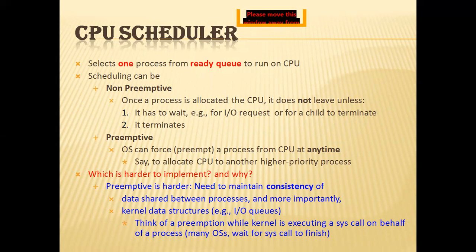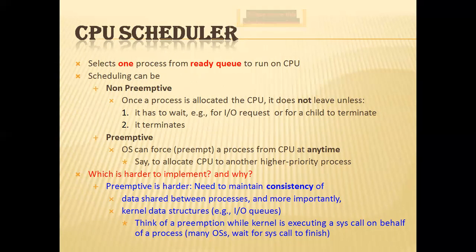As I told you in previous classes, there are three types of schedulers: long-term scheduler, short-term scheduler, and medium-term scheduler. In the long-term scheduler, we basically select processes from secondary storage devices. In the short-term scheduler, we select among processes that are ready to execute and allocate the CPU to one of them. In the medium-term scheduler, a process is removed from memory to reduce the degree of multiprogramming.